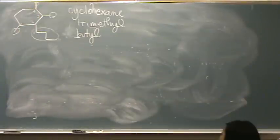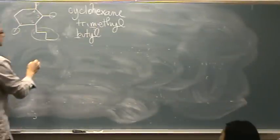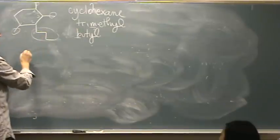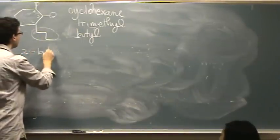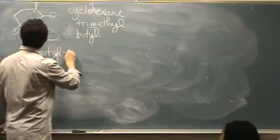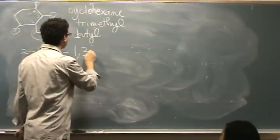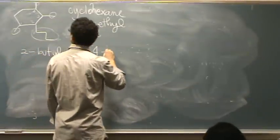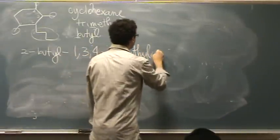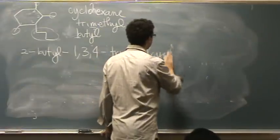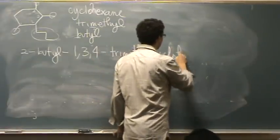That's one option. So this would give us, if we numbered it like that, let's see, butyl needs to come first. So it's a 2-butyl-1,3,4-trimethyl-cyclohexane.